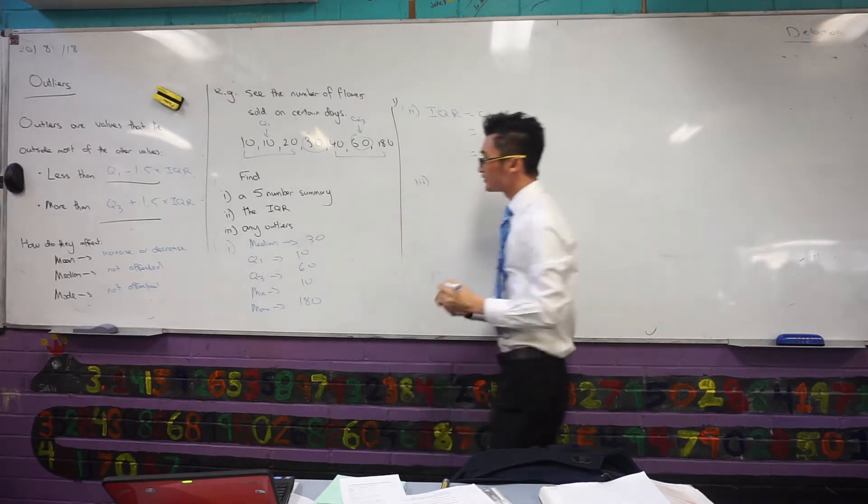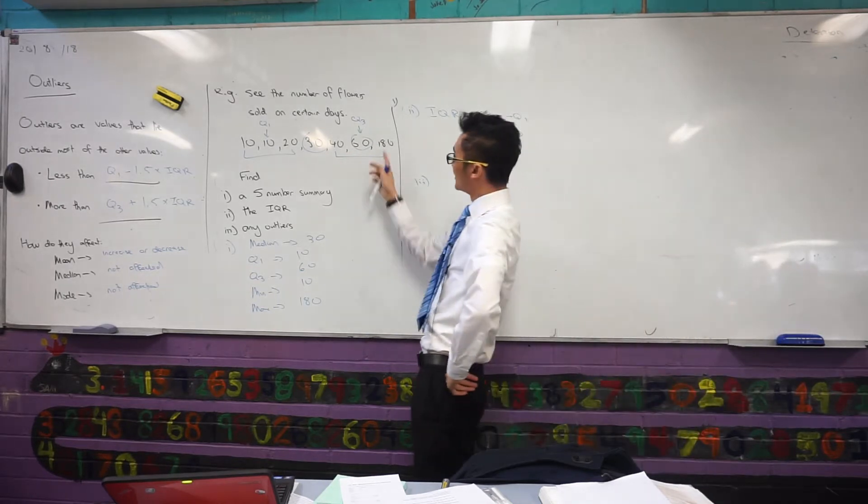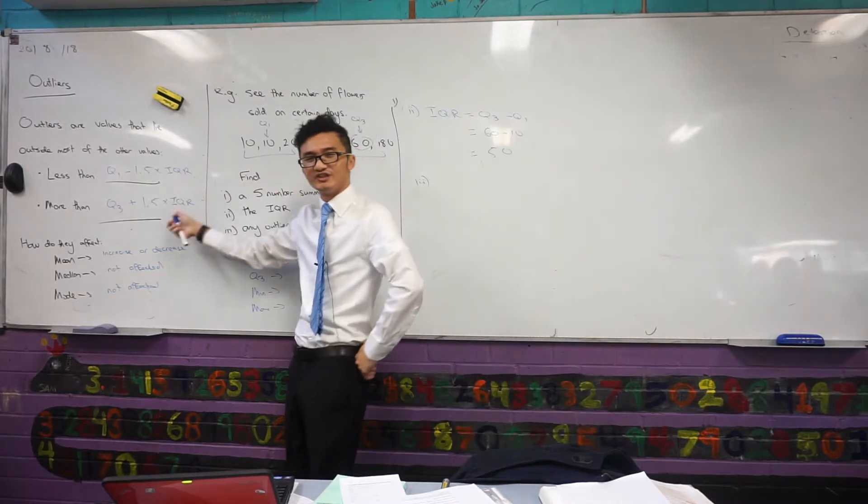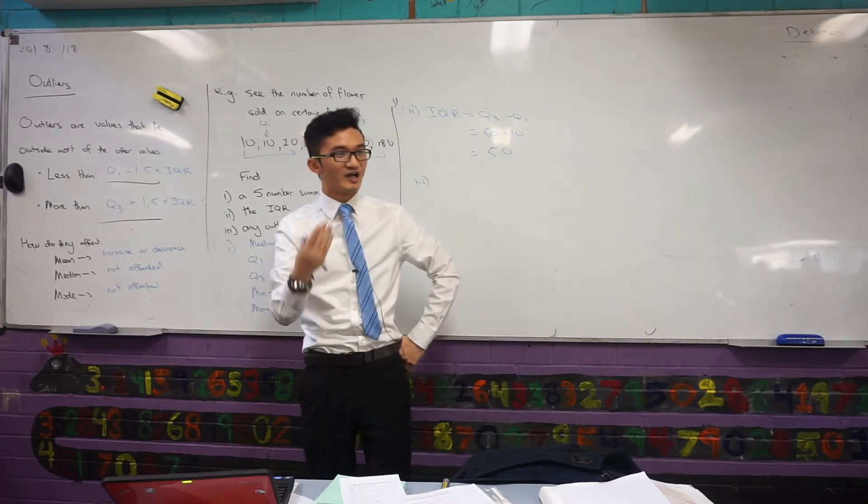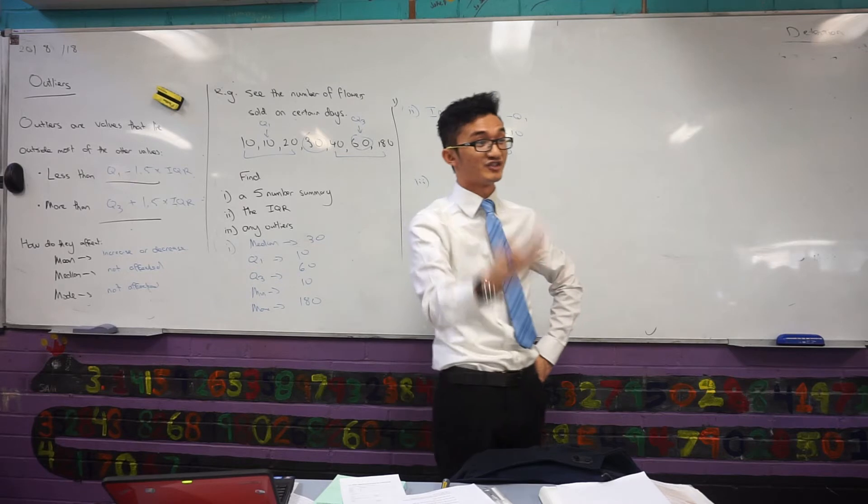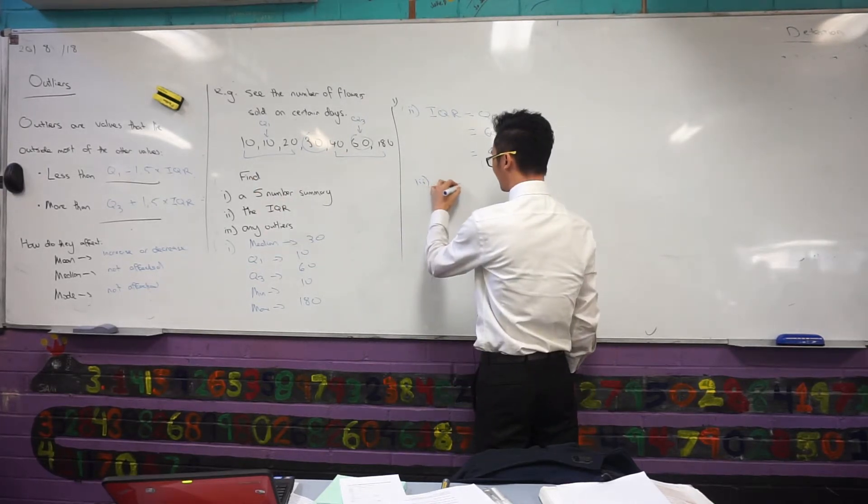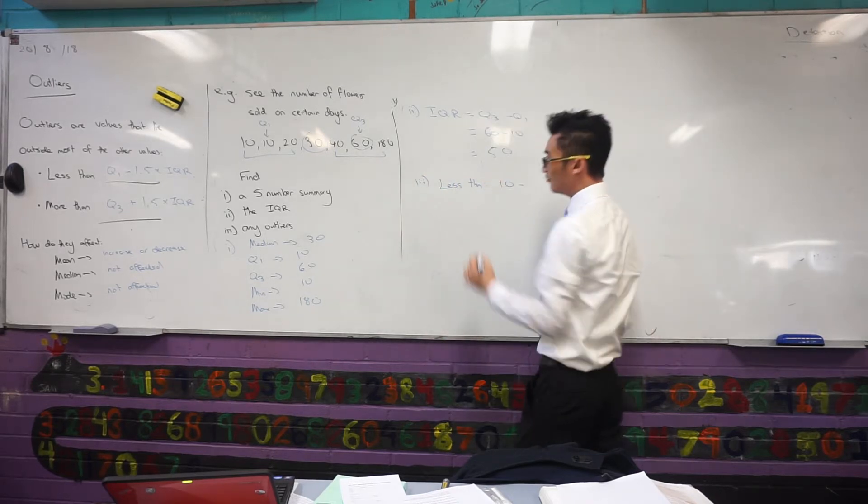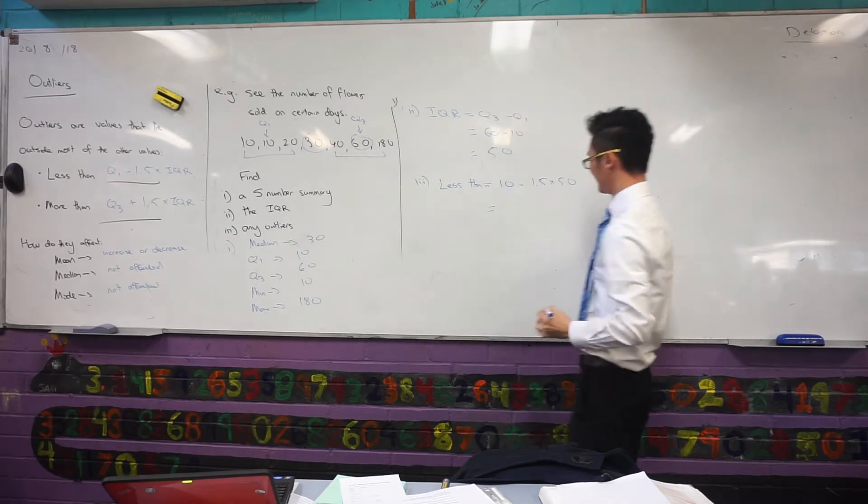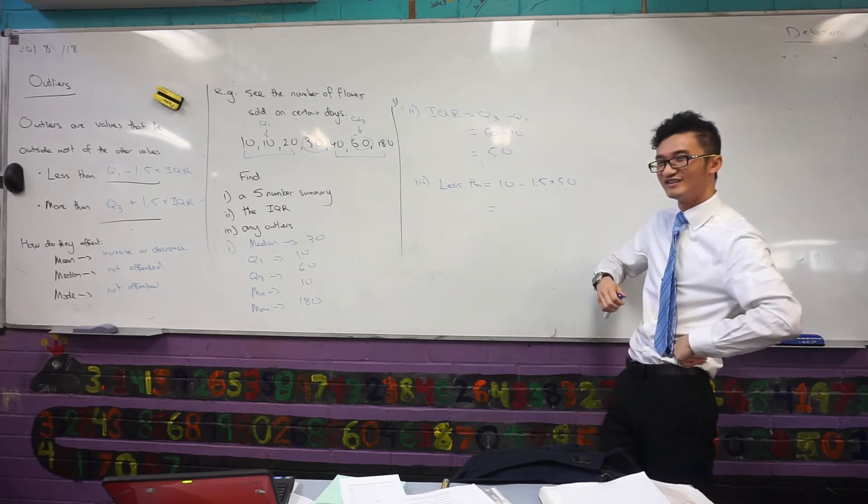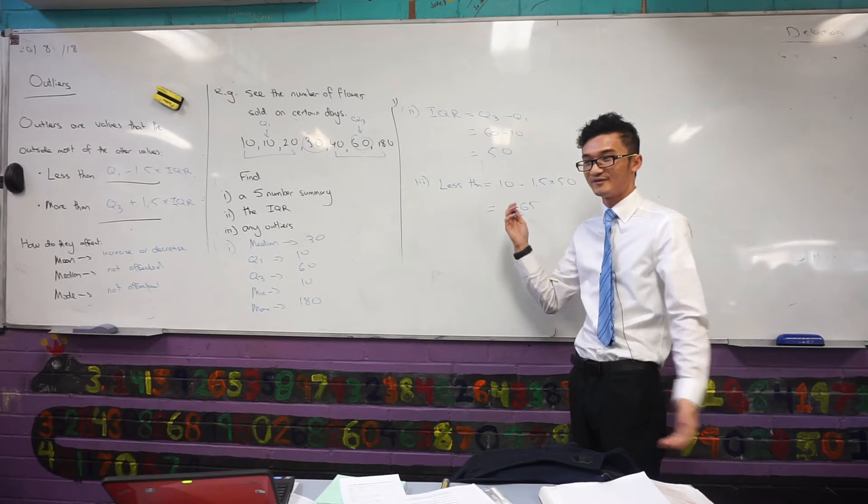Now, here comes the important part. I want to identify, are there any outliers? And we suspected that 180 was an outlier here. But remember, I want to use that strict mathematical definition. I want to see if there are any values less than Q1, which is 10, minus 1.5 times the interquartile range. So 1.5 times 50, that's going to be negative 65, I think. So that doesn't really make sense. You can't have negative flowers sold. So obviously we're not going to have any values that are lower than that.